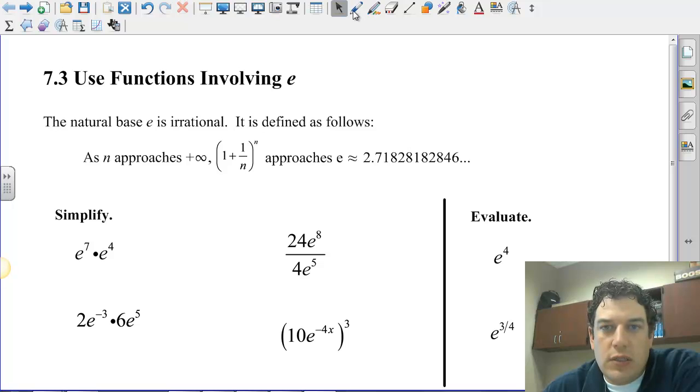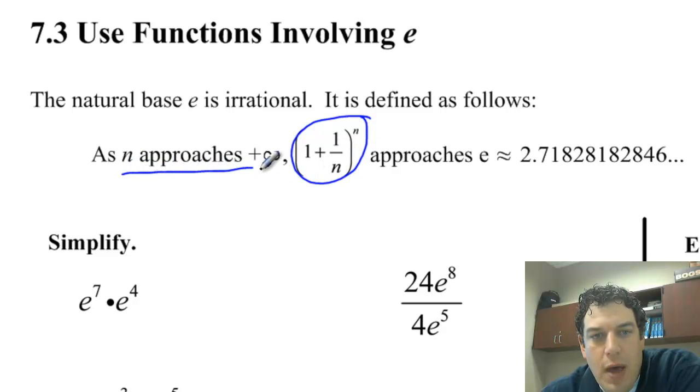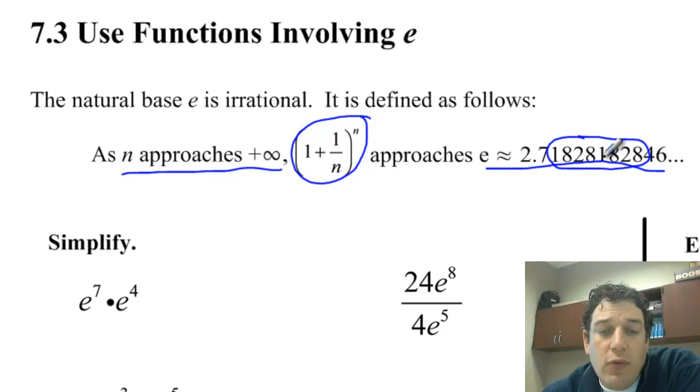Yesterday you did an example, or two days ago you did an example, where we found what this was as we improved or increased n. And as n got bigger and bigger, as n approaches positive infinity, making these bigger and bigger, we get closer and closer to this number e, which is 2.71828182846, and it keeps going on forever with no repeating. Even though this 18281828 kind of seems like it repeats, it does go on forever and it never repeats.